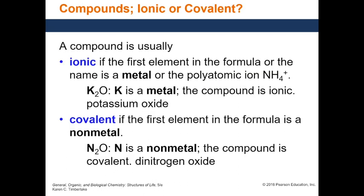Next, let's identify whether a compound is ionic or covalent. Ionic compounds consist of a metal and a non-metal, or a polyatomic ion such as ammonium. Covalent compounds (molecular compounds) contain only non-metals. The rule: if the first element is a metal or ammonium, the compound is ionic; if the first element is a non-metal, the compound is covalent.